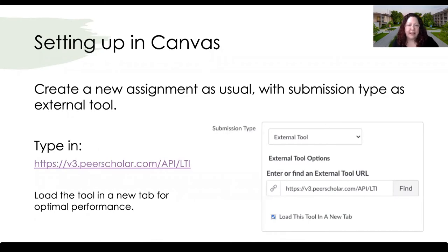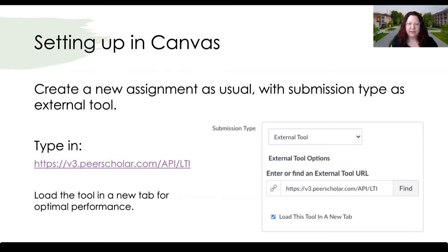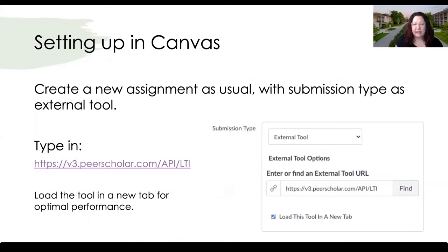Setting up in Canvas is pretty easy. It's an external tool, not the built-in tool that comes with Canvas. You just go through a couple more steps: when setting up an assignment, you select the external tool and type in the URL. It performs a little better if you load the tool in a new tab — there's a checkbox for that when creating an assignment.